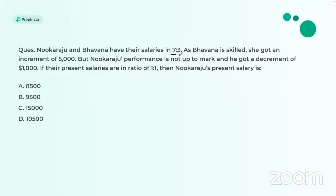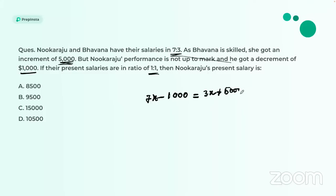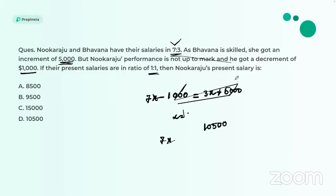Nohrajo and Bhavana have salaries in ratio 7:3. Bhavana gets an increment of ₹5000, while Nohrajo gets a decrement of ₹1000, making their salaries equal. Setting up: 7x − 1000 = 3x + 5000, so 4x = 6000, giving x = 1500. Nohrajo's original salary = 7 × 1500 = ₹10,500. Present salary = 10,500 − 1000 = ₹9,500.